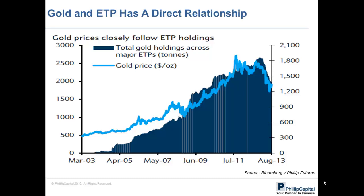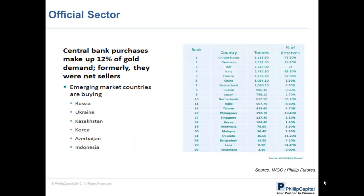When holdings are high, investors are bullish on gold. When holdings are low, investors are generally bearish on gold. Based on the chart, we witness ETP holdings were as high as 2,500 tons of gold early this year, before negative news flow came into the market and caused prices to depress. As of October 2013, total gold holdings remained in net outflow, which continues to weigh on gold prices.